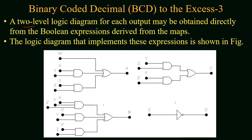In the last step we have to draw the logical diagram. A 2-level logical diagram for each output may be obtained directly from the boolean expressions derived from the K-maps, and the logical diagram that implements these expressions is shown in the figure. We have 4 output variables A, B, C, D and 4 inputs W, X, Y, Z. It is assumed that normal and complemented inputs are directly available. In the case of D, where D equals Z', an inverter is used to complement Z, though you have the option to directly use Z'. This completes the code converter circuit for BCD to XS3.